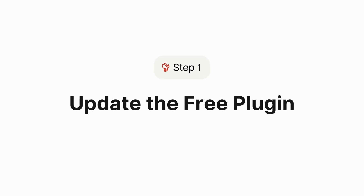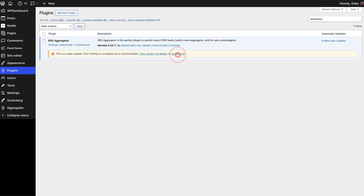The first step for all users is to update the free WP RSS Aggregator plugin on your site. If automatic updates are enabled, this may already be complete. Otherwise, go to the plugins page in your WordPress dashboard and click Update Now. This ensures your site is ready for version 5.